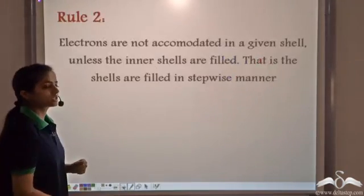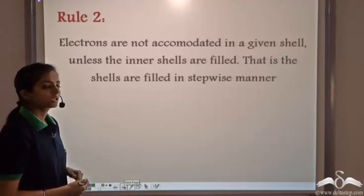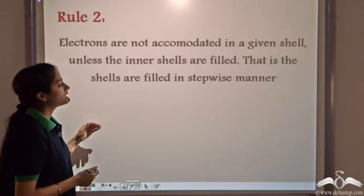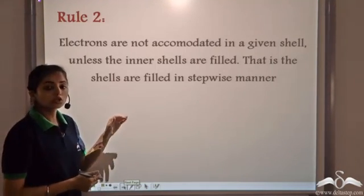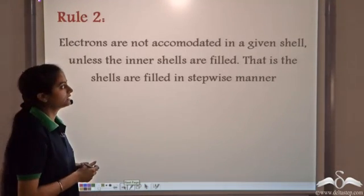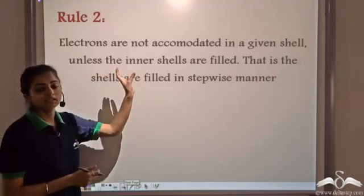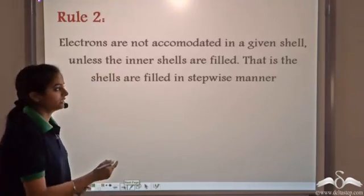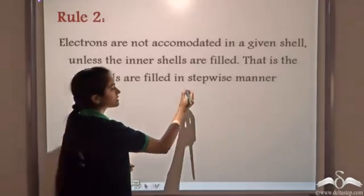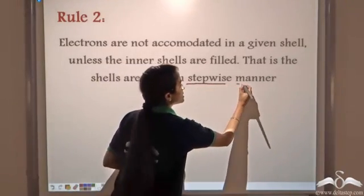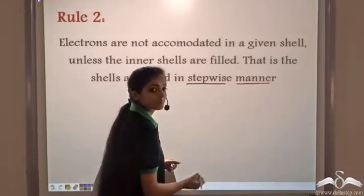Let's move to the second rule. The second rule says that electrons are not accommodated in a given shell unless the inner shells are filled — that is, the electrons are filled in a stepwise manner.